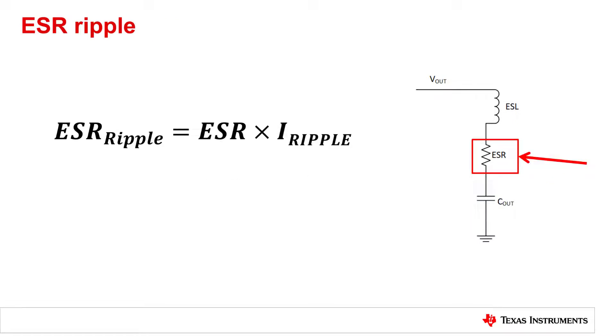Output voltage ripple caused by ESR generally dominates space grade designs and can be calculated by the equation on the screen. Two methods of reducing this ripple are increasing the output inductor value, thus decreasing the current ripple going through the inductor, or increasing the number of output capacitors in order to achieve lower equivalent ESR.